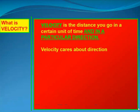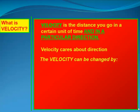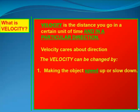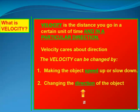Velocity is the distance you go in a certain unit of time and in a particular direction — velocity cares about direction. Velocity can be changed by either making the object speed up or slow down, or by changing the direction of the object. That second one is key: if a car is going at 10 miles per hour and turns a corner, continuing at 10 miles per hour the entire time, its speed did not change, but its velocity did change because it changed direction.